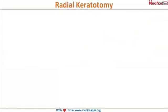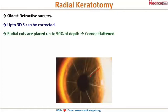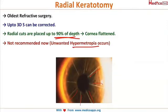The most primitive type of refractive surgery is radial keratotomy, which could correct up to three diopters of spherical error. Radial cuts were made at 90% depth of the cornea to flatten it, mainly correcting myopia. However, because ablation depth was not precisely matched to the patient's refractive error, it resulted in unwanted hypermetropia and is no longer recommended.